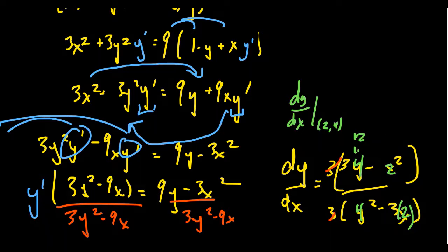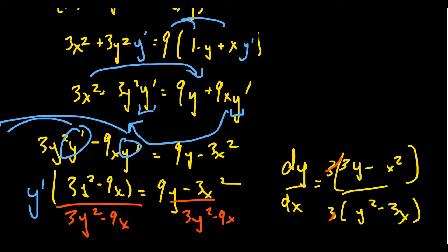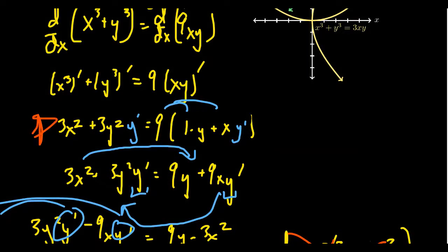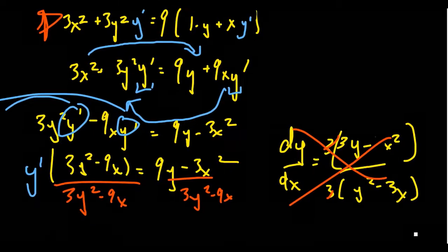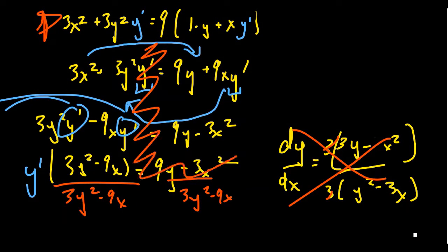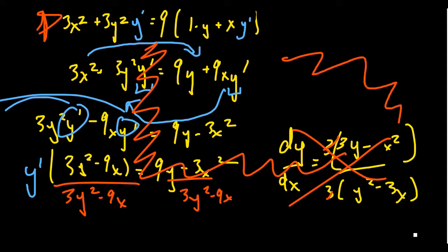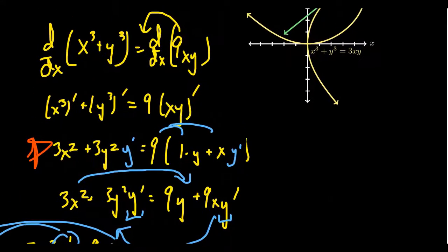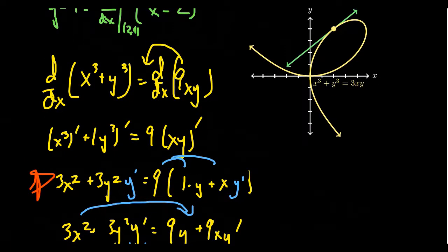I want to show you a slightly different approach to the same situation — it turns out we did more calculation than we needed. We didn't actually need the full derivative formula. We need a specific derivative value, not a general formula. Coming back to the step right after differentiating both sides, all the calculus was already done at that point. Everything after was just algebra and arithmetic — which is not necessary if we plug in x and y right away.